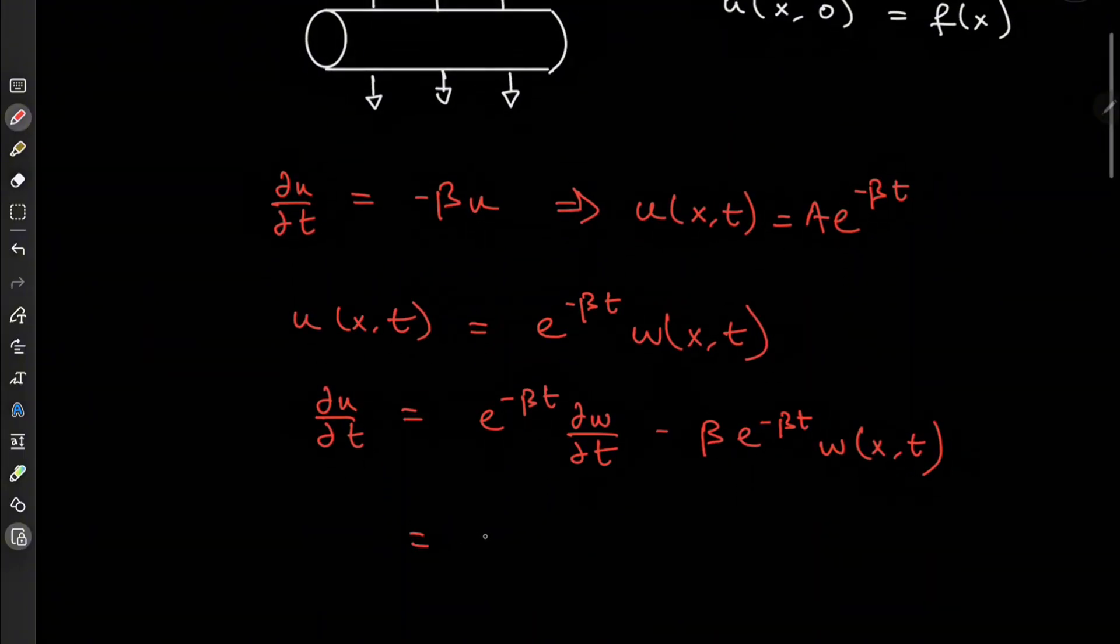So this sorts out to e to the minus beta t times partial w over partial t minus, this term is once again our assumed temperature function or the form of the temperature function. So that is beta times u.